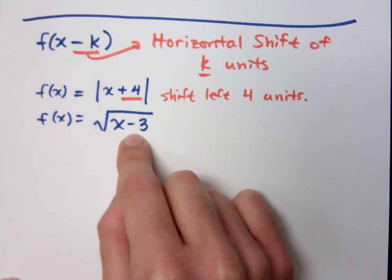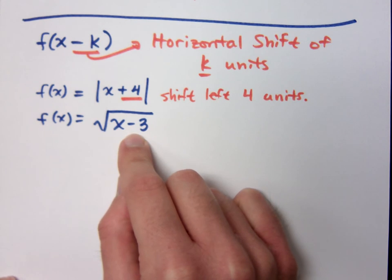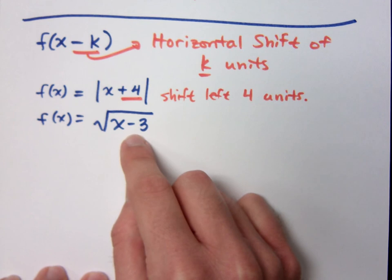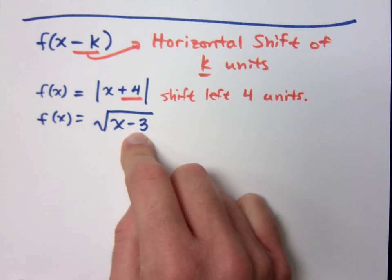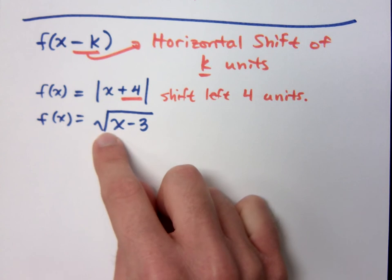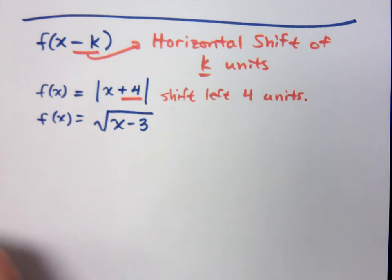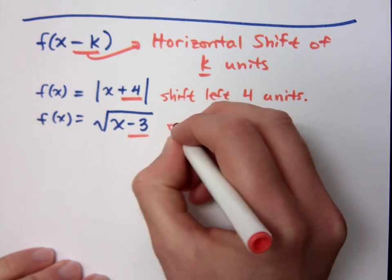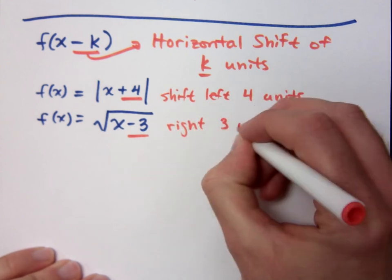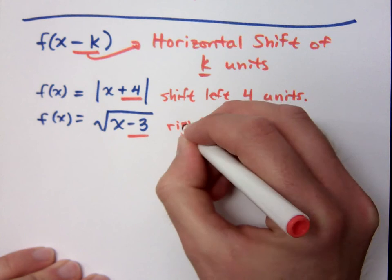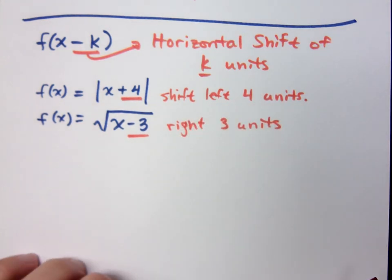Now this minus 3 is inside the function. It's shifted to the right. It's shifted to the right 3. Now in terms of a head start, is a minus 3 a head start? No, that means you have to do what? You have to wait. So where did the square root guy start? What was his basic point, his main starting point? 0, 0. But if I say you can't have that, you've got to wait a while, you've got to wait 3 units before you can start that guy. So that means he's been shifted to the right 3 units.